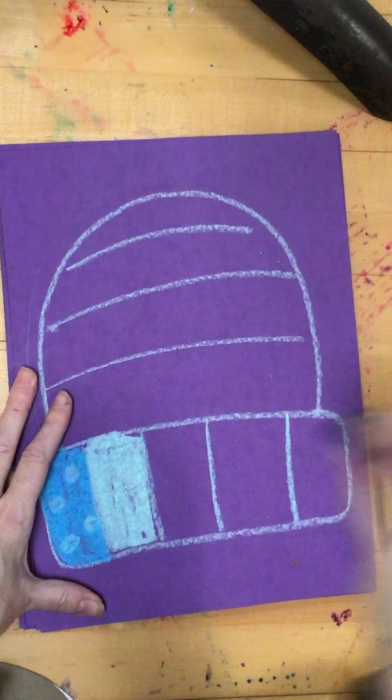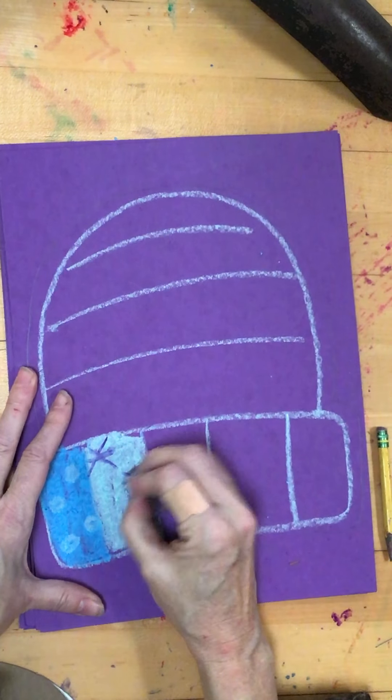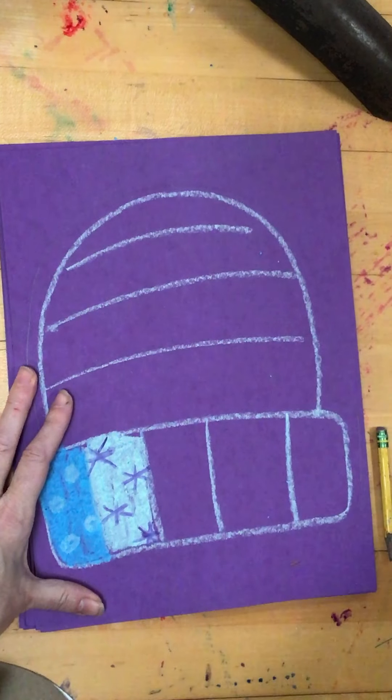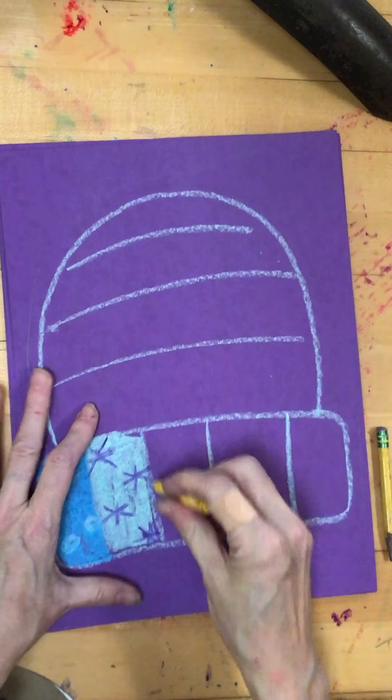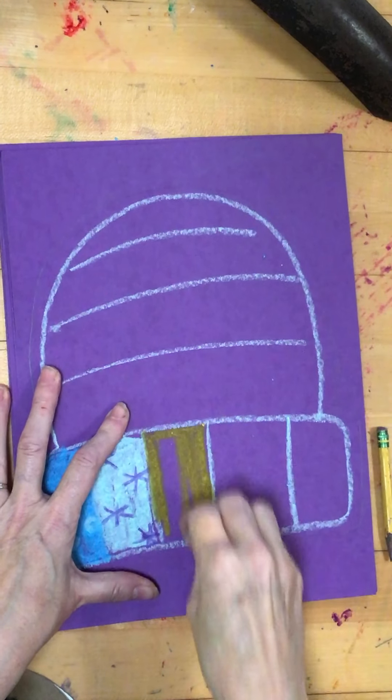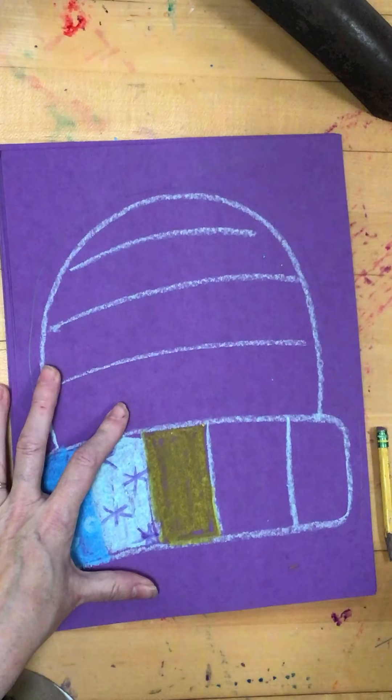Then, maybe I want to put snowflakes on this one. So, I can draw a design on the top. So, in each space, you might want to use two different colors to create your design or pattern.